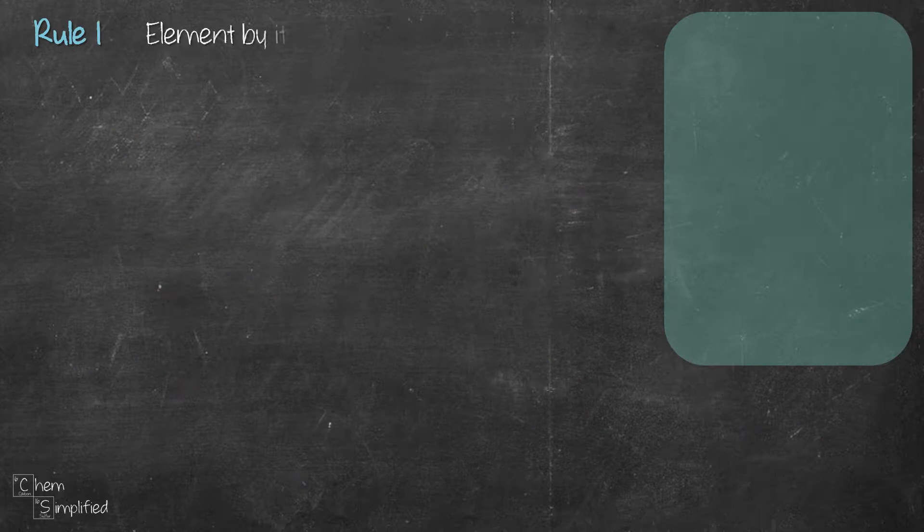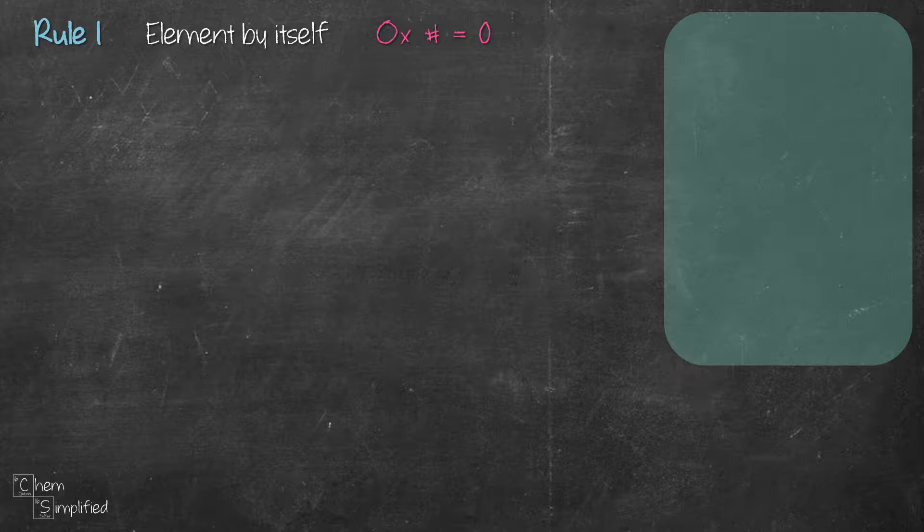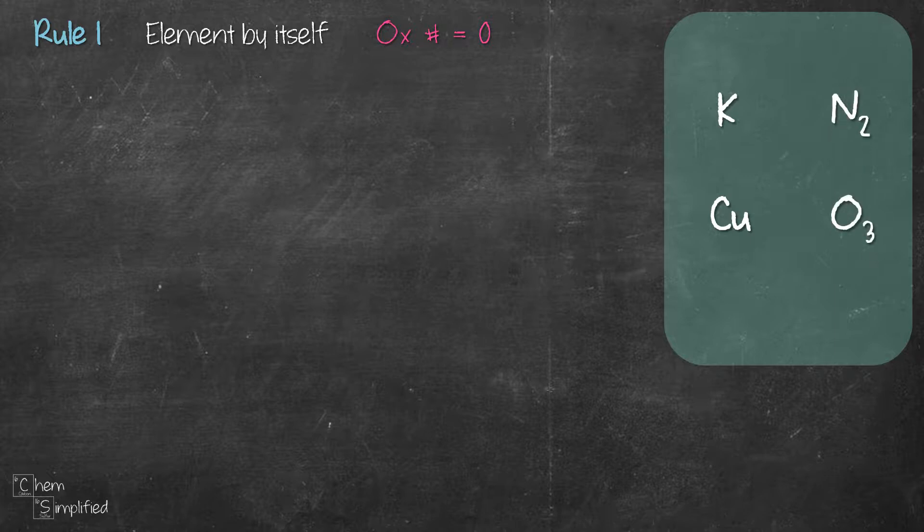Let's start with the first rule. It states that if the element is by itself, the oxidation number is zero. For example, we have K, Cu, N2, and O3. They all consist of only one type of atom. In cases like this, the oxidation number of the atom K, Cu, N, and O are all the same, which is zero.